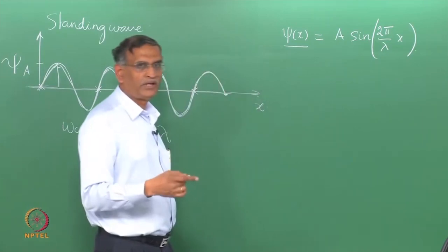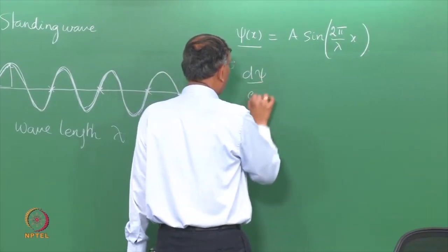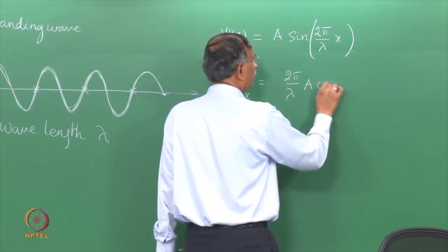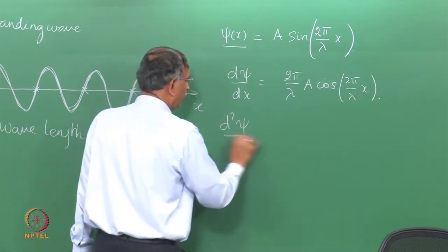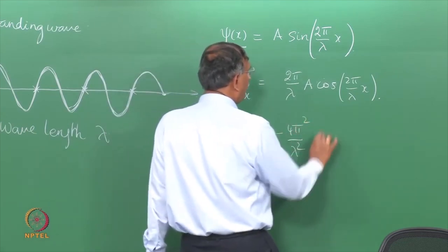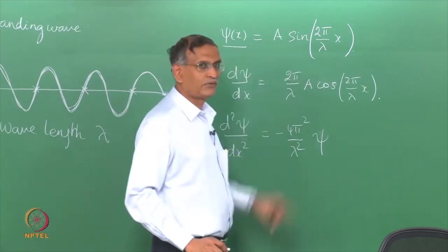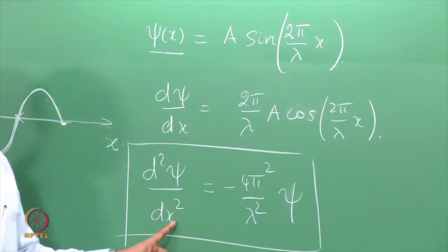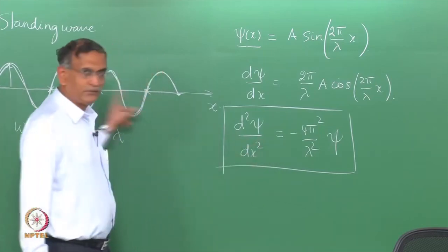When you differentiate psi twice, it satisfies a derivative equation. The first derivative d·psi/dx is (2π/λ)·A·cos(2π/λ · x). The second derivative d²ψ/dx² equals −(4π²/λ²)·ψ(x), because differentiating again brings back sin(2π/λ · x) which equals ψ(x). Therefore the standing wave satisfies the differential equation d²ψ/dx² = −(4π²/λ²)·ψ, where λ is the wavelength.